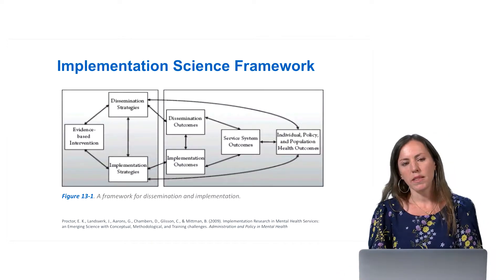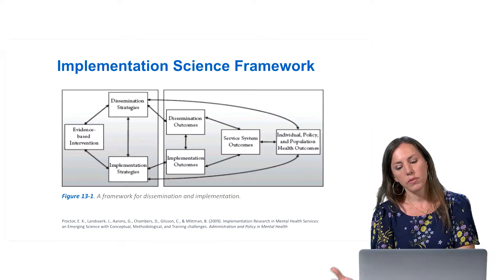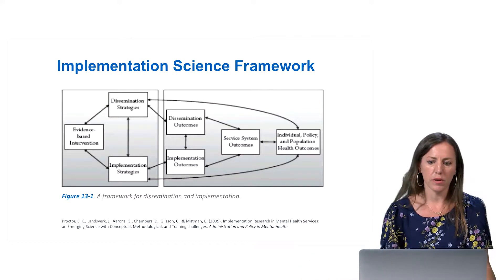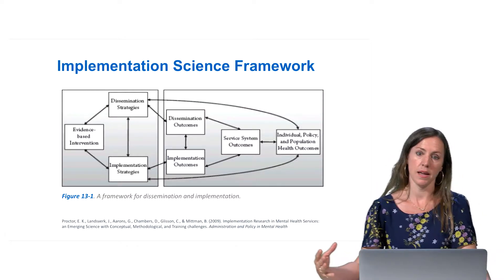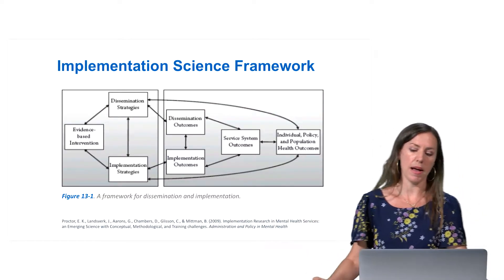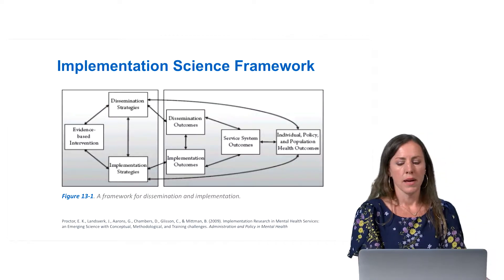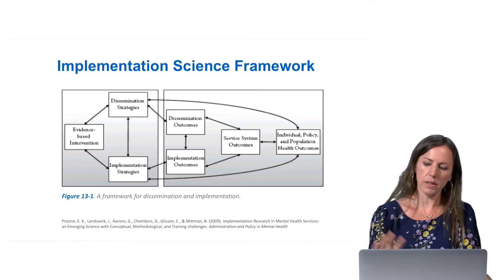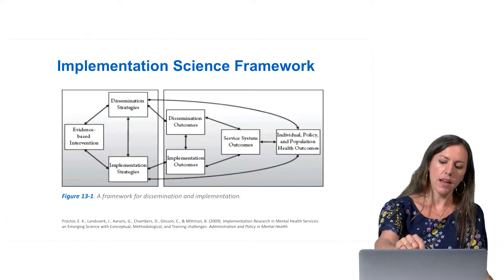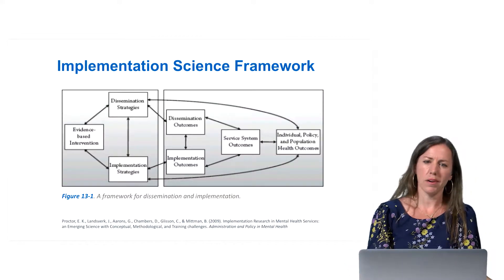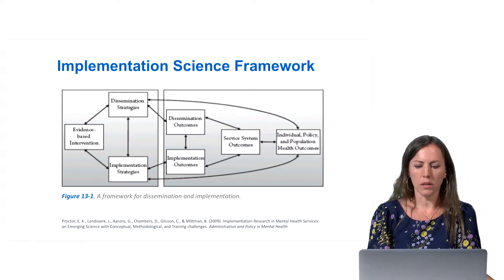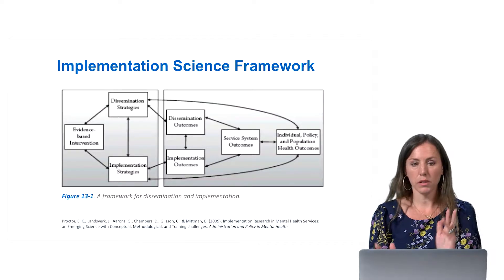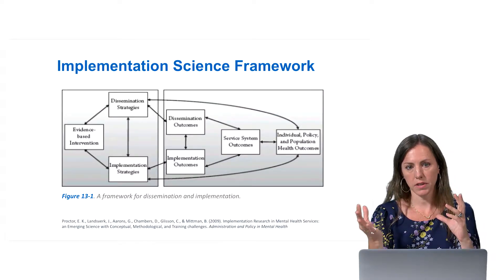Typically when we think about outcomes in research in public health, we tend to only think about behavioral, quality of life, health outcomes, or health equity — how an intervention has addressed these issues. In implementation science, those are important, but they're often a little more distal or secondary. The primary outcomes we're evaluating are what we might call dissemination outcomes and implementation outcomes — they're a little more proximal. So it's a bit of a shift in thinking.